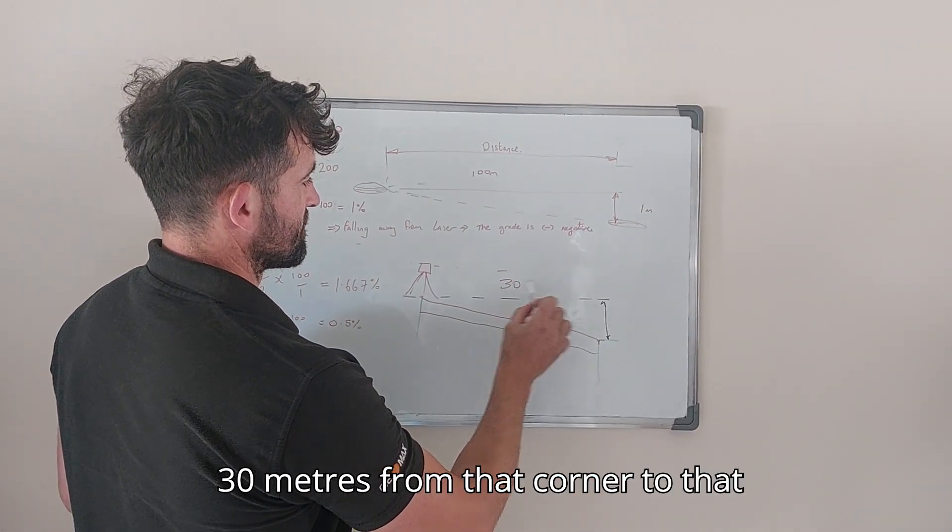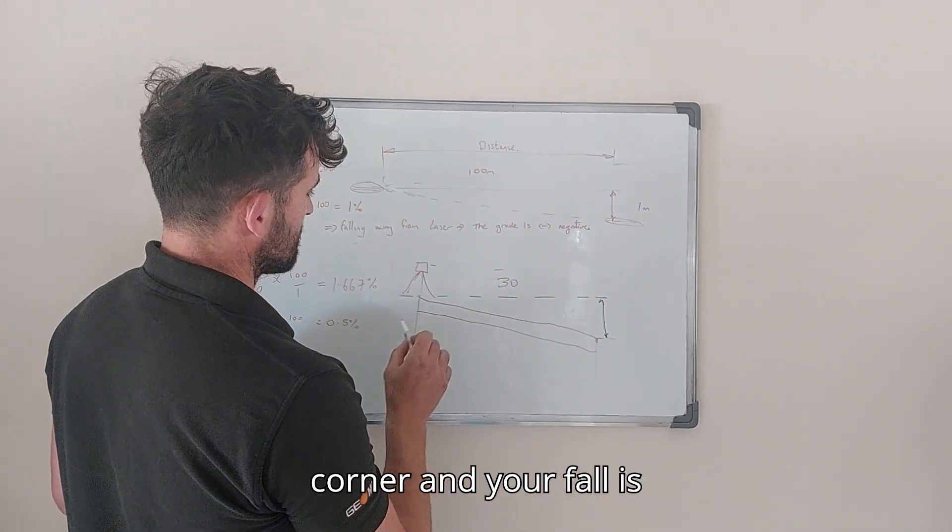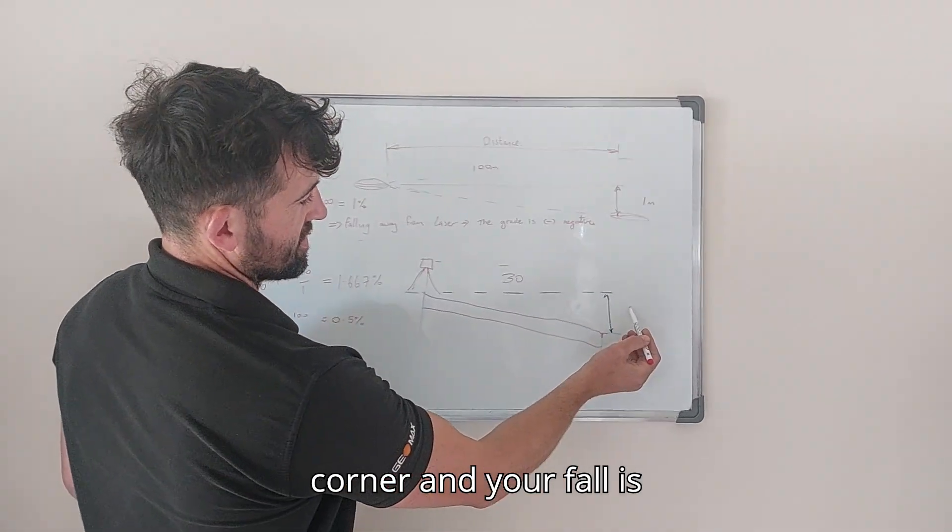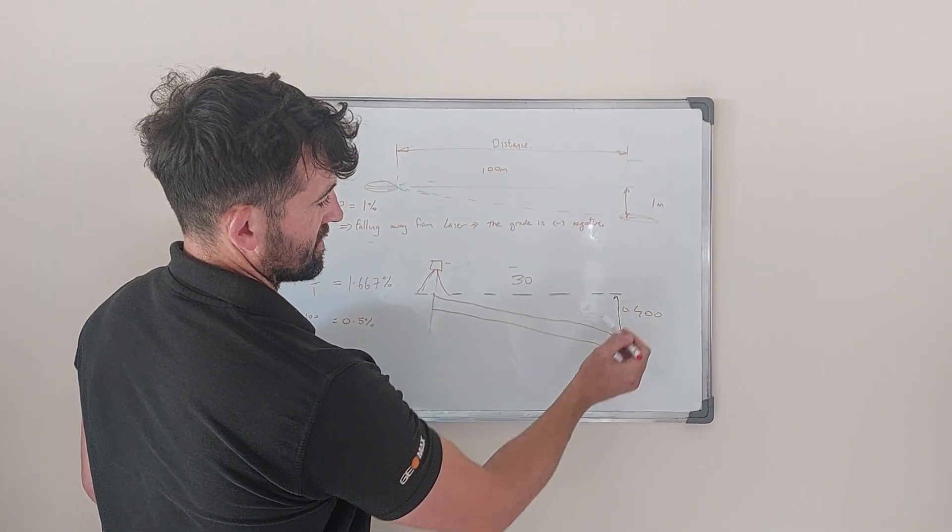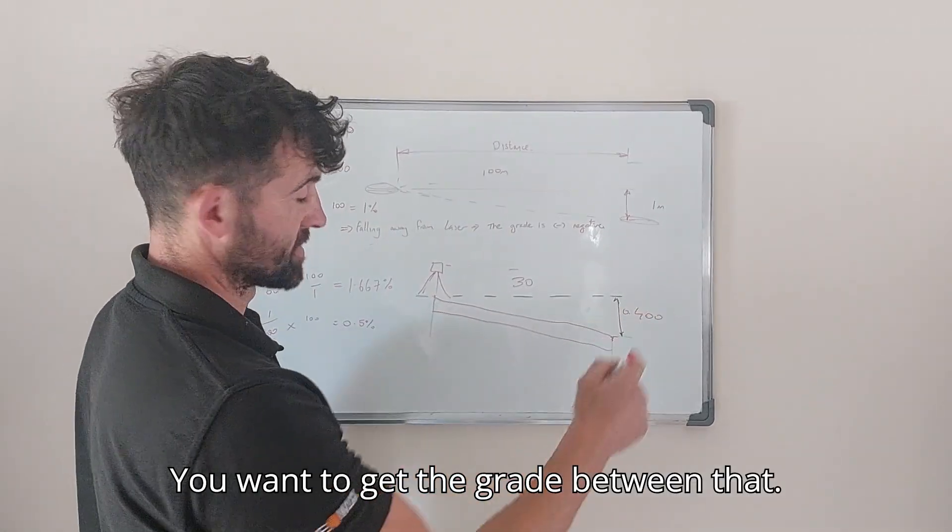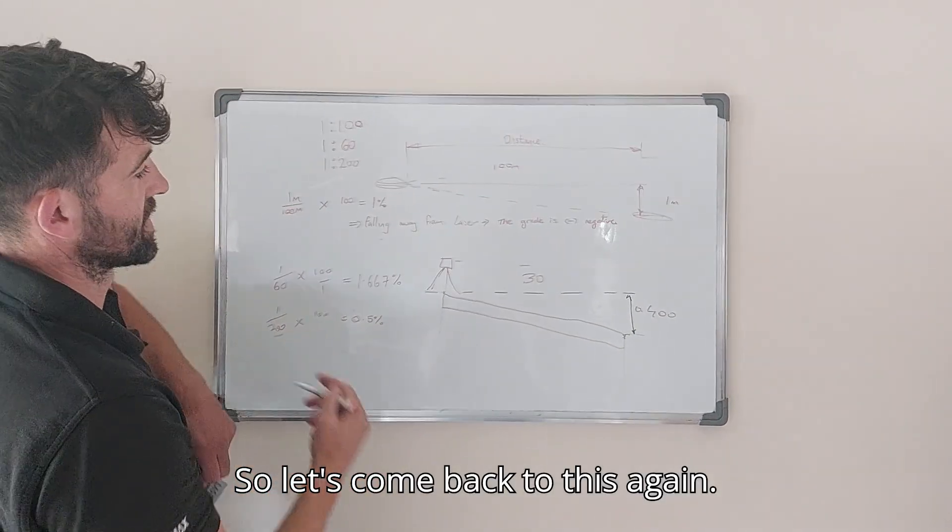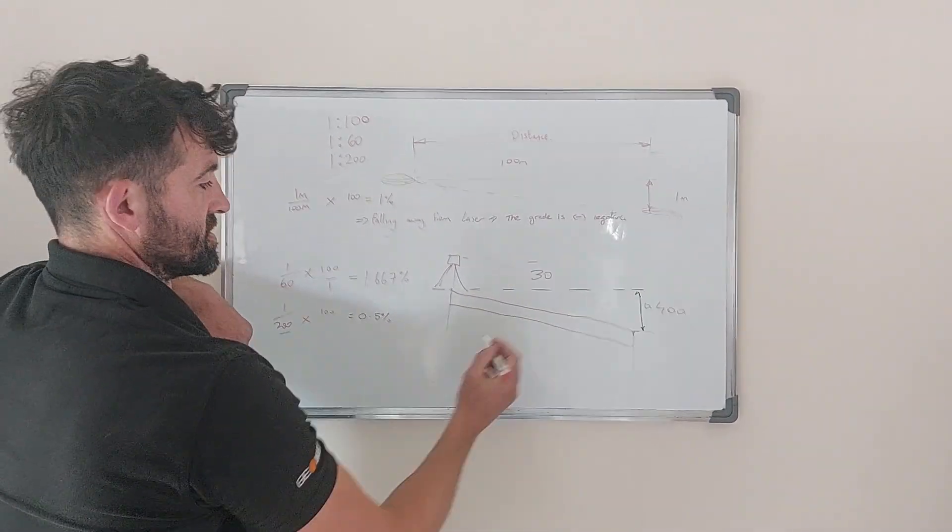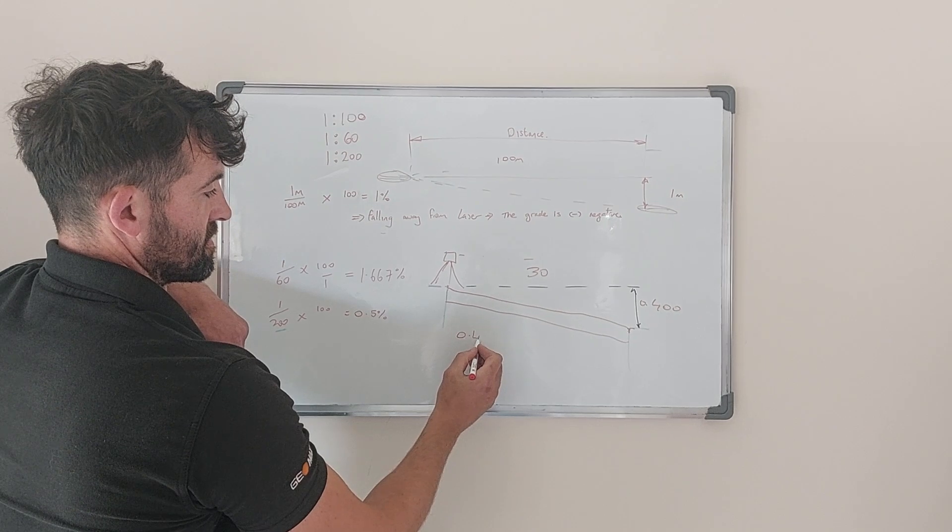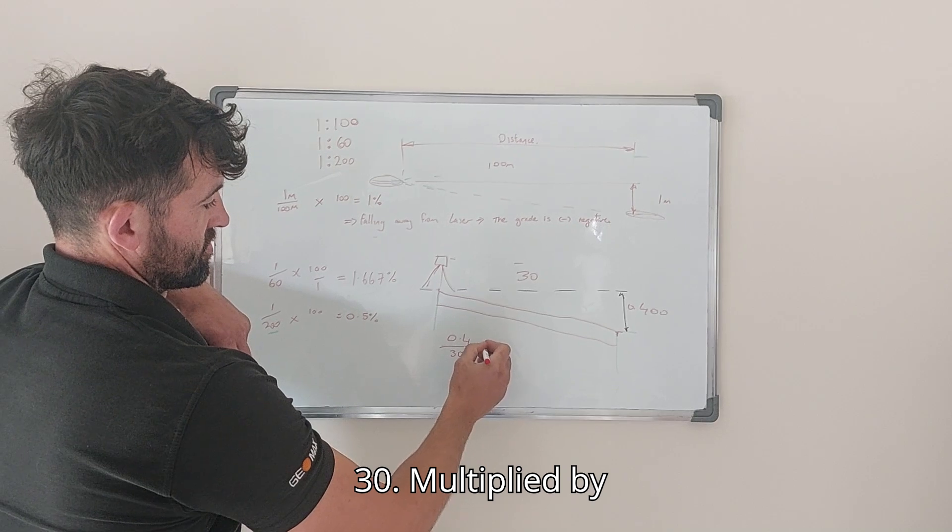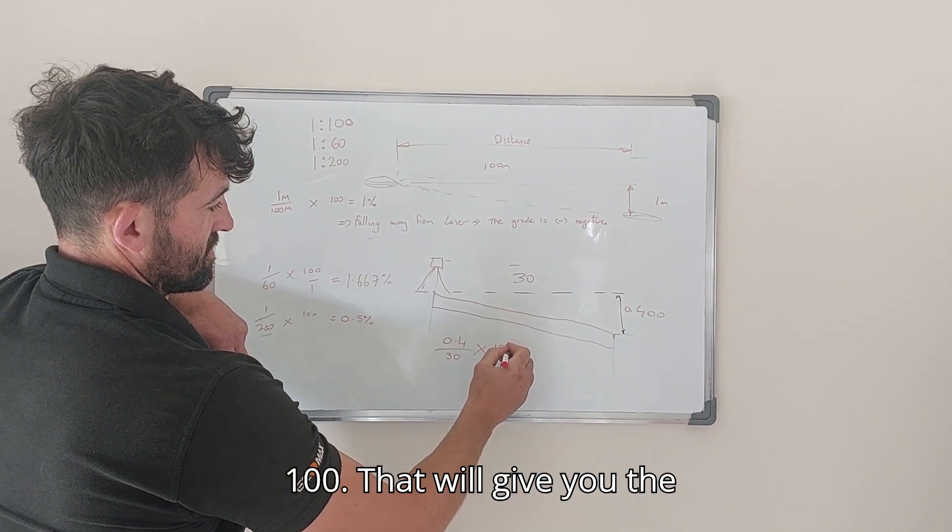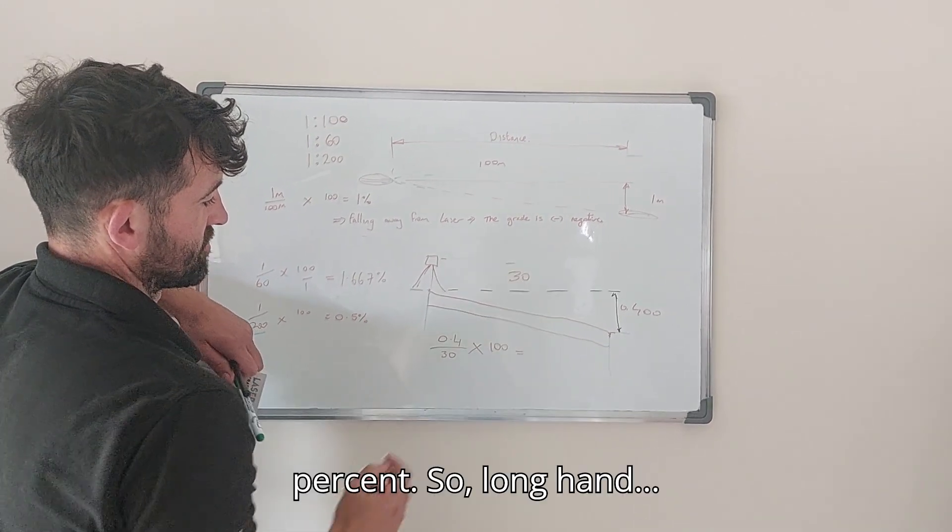If this distance is 30 meters from that corner to that corner and your fall is 400 millimeters or 0.4, you want to get the grade between that. So let's come back to this again: 0.4 divided by 30, multiplied by 100 and that will calculate the percent.